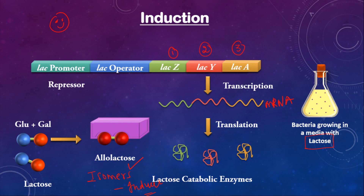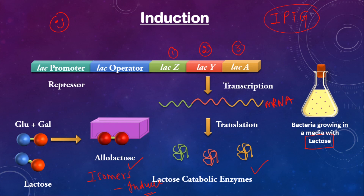So in summary, in the induction mechanism there is an involvement of an inducer — the substrate itself or its isomer. There is also another chemical called IPTG, which resembles allolactose; when IPTG binds to the repressor, the repressor is also removed. When such inducers bind to the repressor, the repressor can no longer bind to the operator, RNA polymerase transcribes and translates the structural genes of the lac operon, and the catabolic enzymes break down lactose to produce energy. When lactose is absent, the repressor remains bound to the operator, preventing transcription and conserving energy.